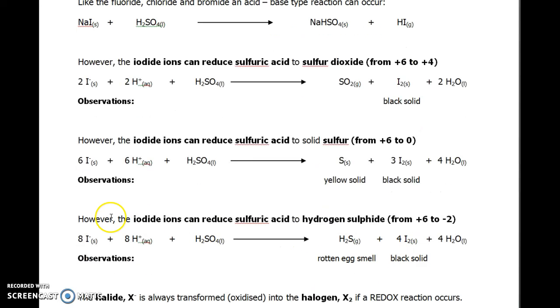Finally, the reaction of iodide ions to reduce sulfuric acid to hydrogen sulfide. Hydrogen sulfide is notable because it's got that rotten egg smell. The oxidation number change of sulfur is quite dramatic here, going from +6 to -2.